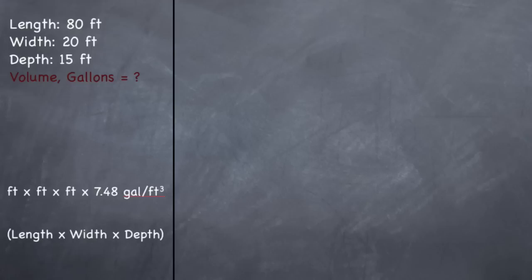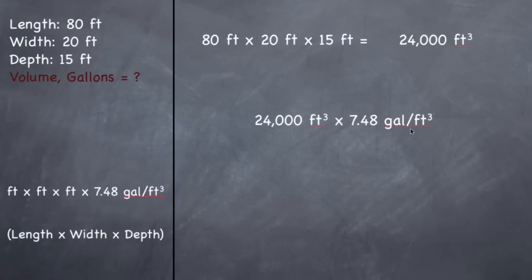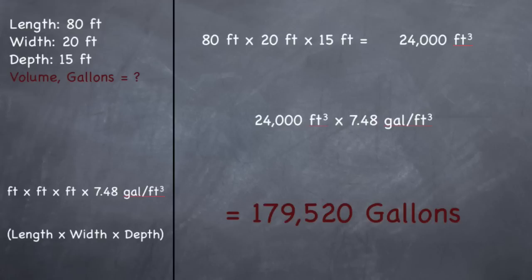In one cubic foot you can fit 7.48 gallons of water — that's where that number comes from. So: 80 feet times 20 feet times 15 feet equals 24,000 cubic feet. That's volume in cubic feet, but we want gallons, so we multiply 24,000 cubic feet by 7.48 gallons per cubic foot. The answer is 179,520 gallons. This rectangular tank operated at a depth of 15 feet holds 179,520 gallons.